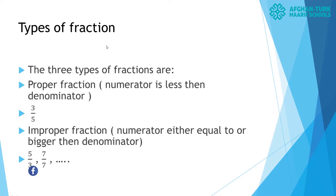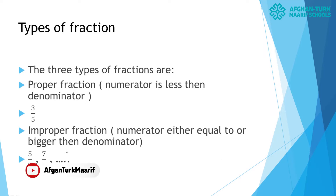Here we have three types of fractions that we will study today. We have three types: proper fraction, improper fraction, and mixed fractions. Proper fractions are those fractions where the numerator is always less than the denominator — like the example 3 upon 5, where 3 is less than 5. The second type is improper fractions, where the numerator is either equal to or bigger than the denominator, as you can see in the examples.